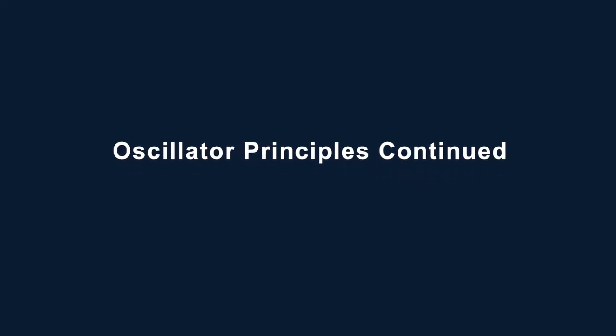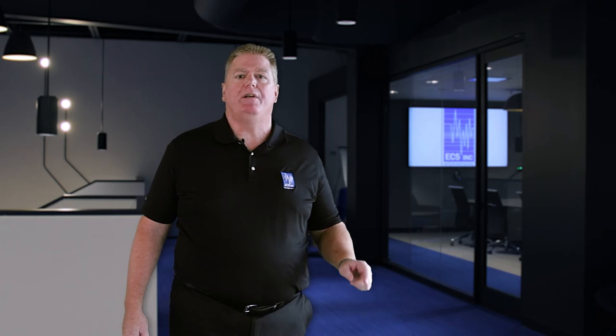Let's continue with oscillator principles. The principle behind the oscillator circuit is a stable, steady-state output signal. One way to accomplish this is by using a positive feedback loop, where a portion of the output voltage is fed back to the input with no net phase shift. This feedback reinforces the output signal, which is then amplified and looped back again, causing the output signal to grow.